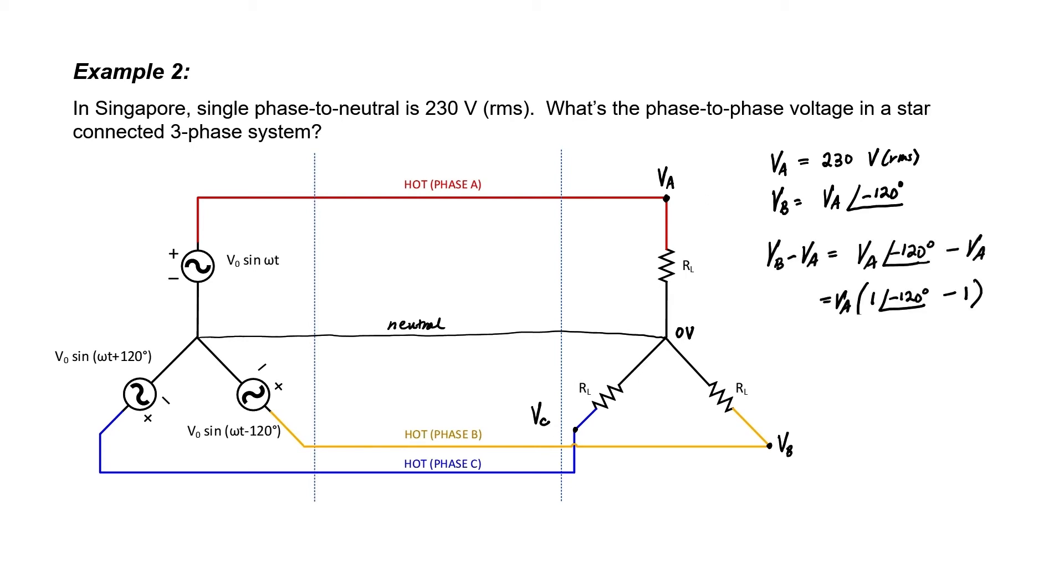I can convert this number in polar form to rectangular form, and then I can subtract one from it. The magnitude of our voltage from phase to neutral was 230 volts RMS, or just VA. What's the magnitude of the voltage between phases B and A? Well, that's equivalent to taking the absolute value of VB minus VA. If I take the absolute value, it's just the absolute value of the product. So it's the absolute value of our voltage from phase to neutral multiplied times the absolute value of this complex number.